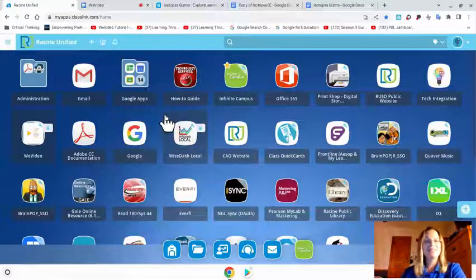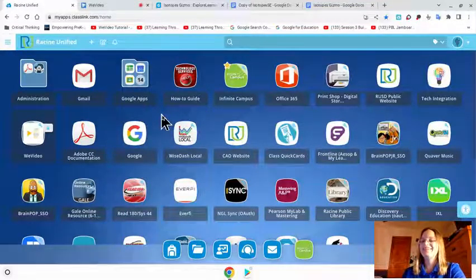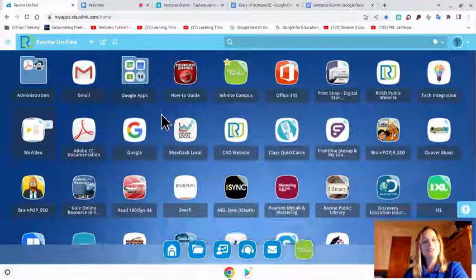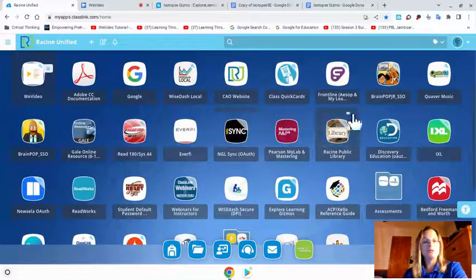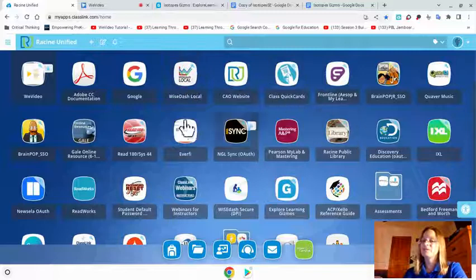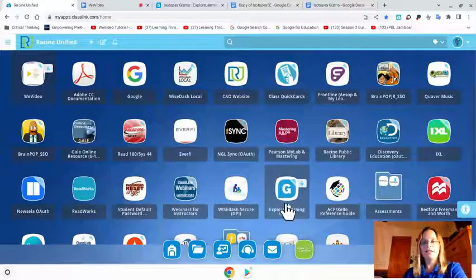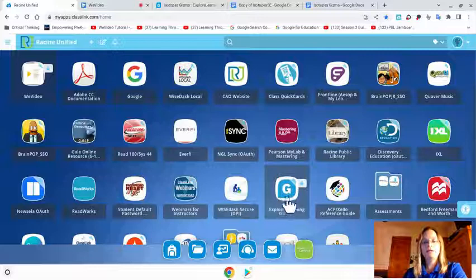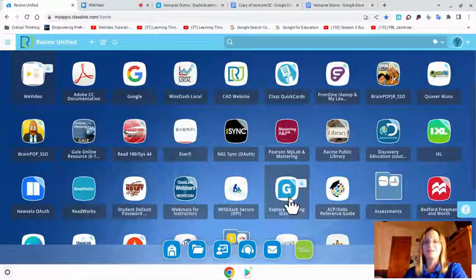Alright guys, time to do another Gizmo. Your favorite, I know. So here's what you're going to do to get to the Gizmo. You're going to go to your ClassLink screen, this one. You're going to find the blue and white icon with the G on it and click on it to open it.